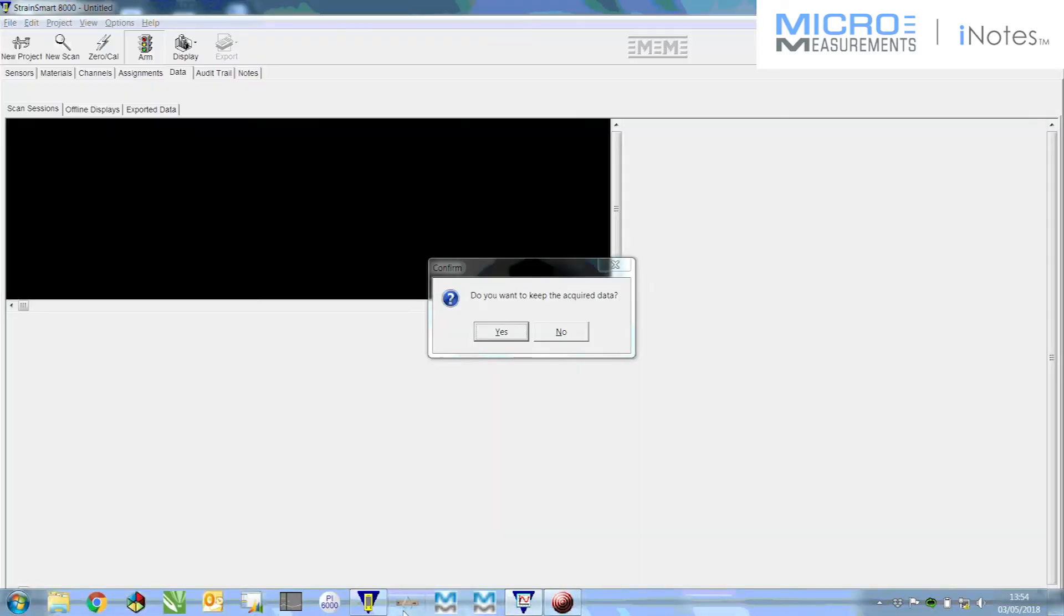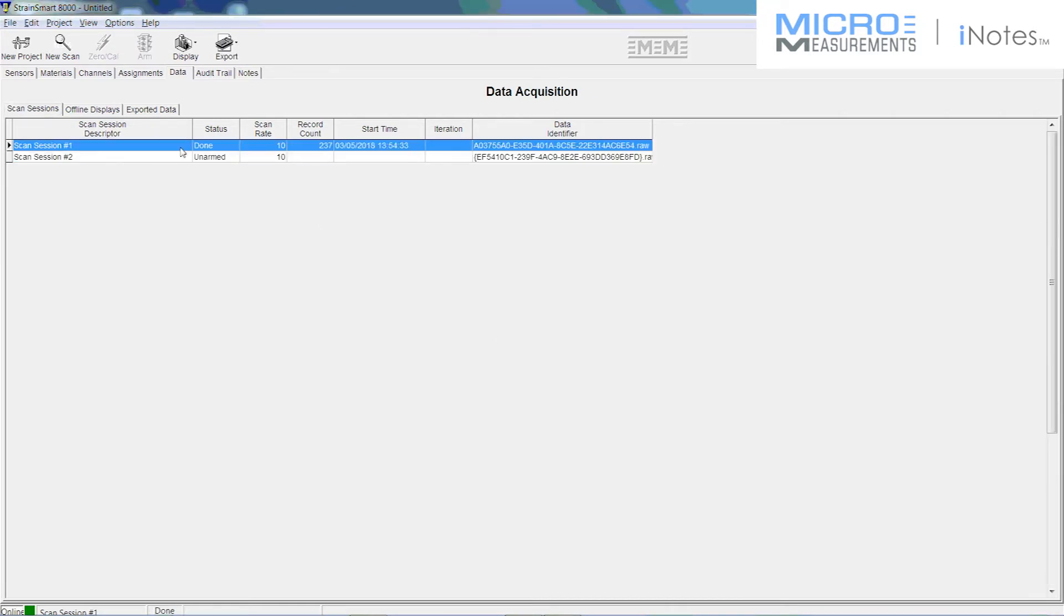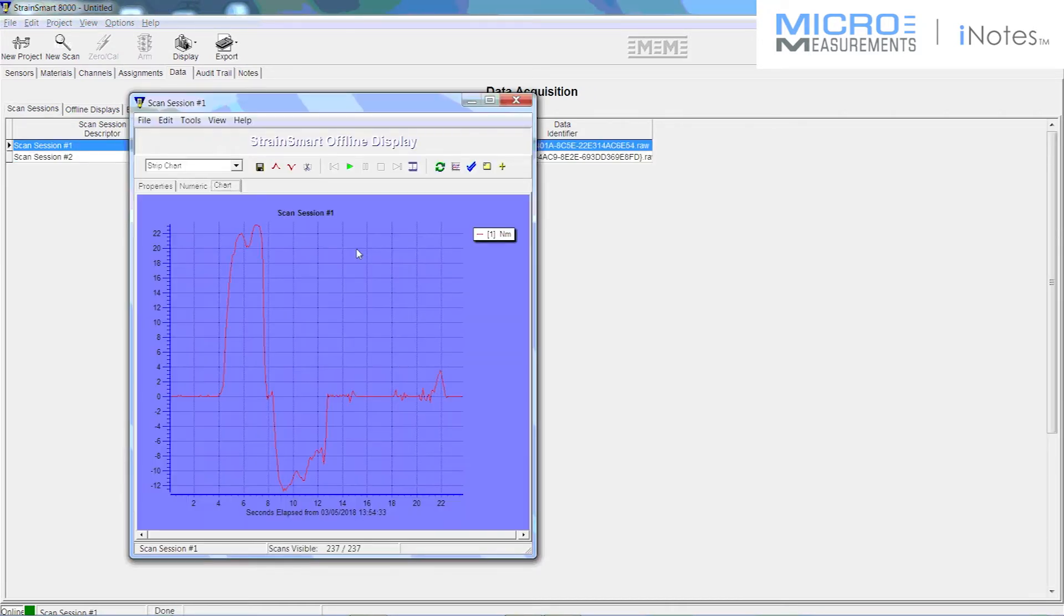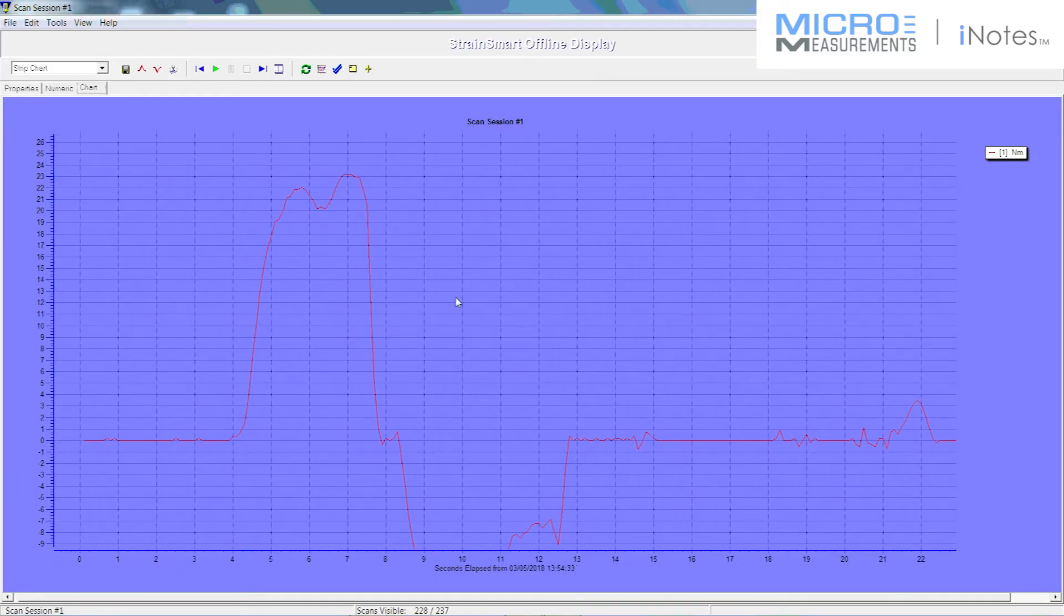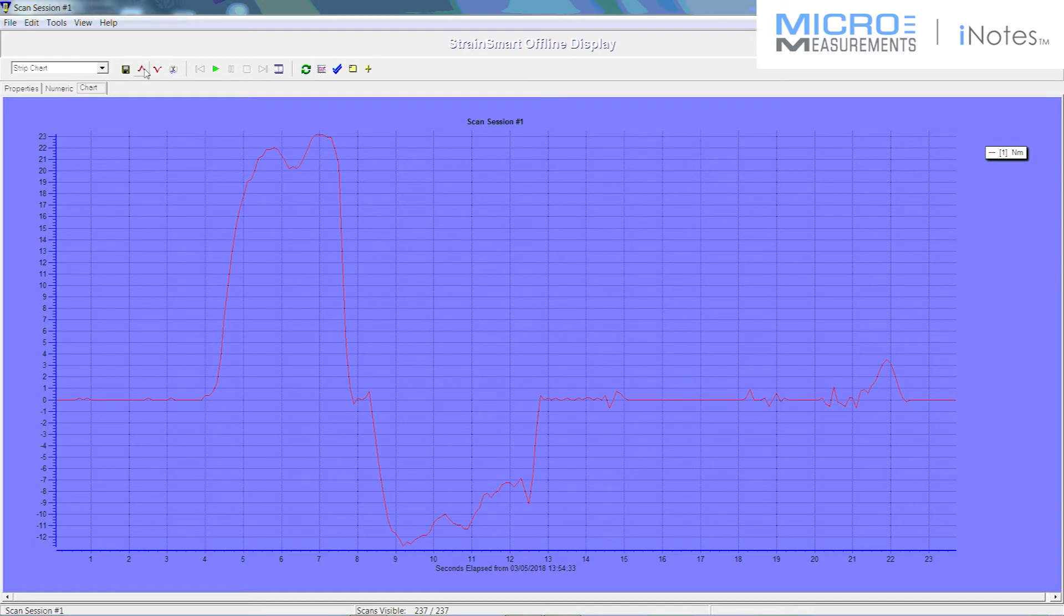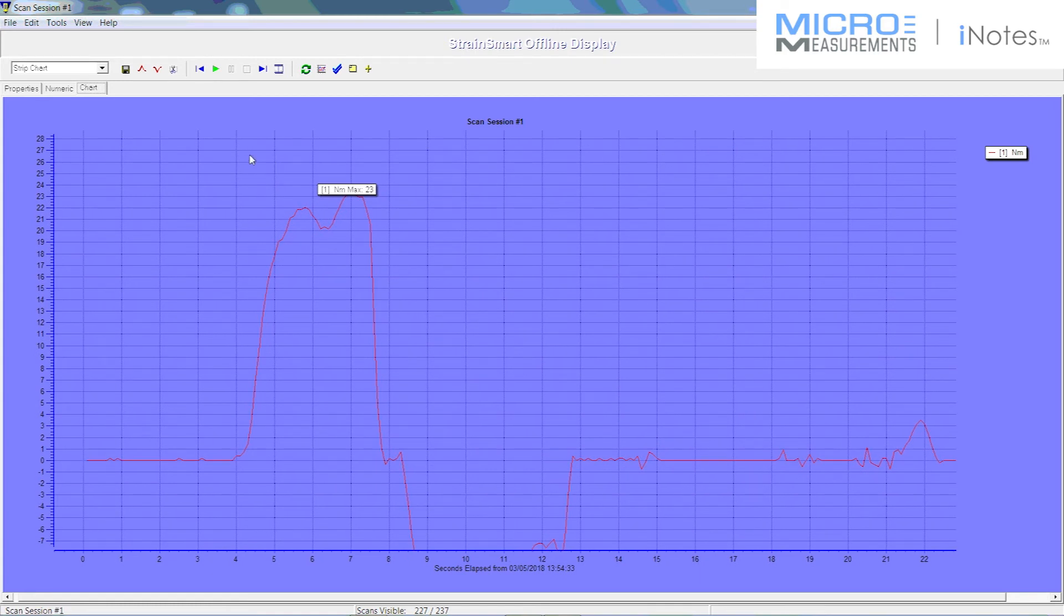Once I've got data of course, I can save it, display it, export it, find max mins. I can do all kinds of things with data once in the computer. So I can scroll around, zoom in. Let's have a look at say maximum torsion during my little test here. You can see there I've got maximum 23 Newton meters. I can now go on to export that for further processing.